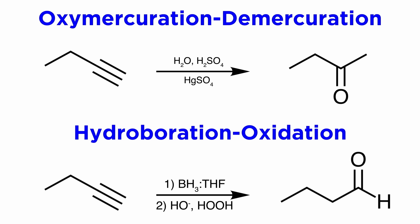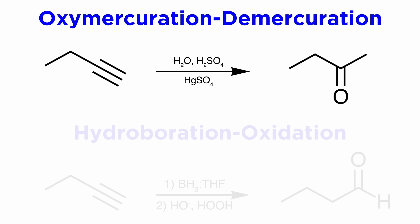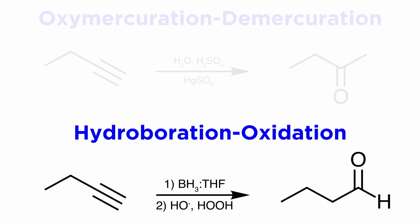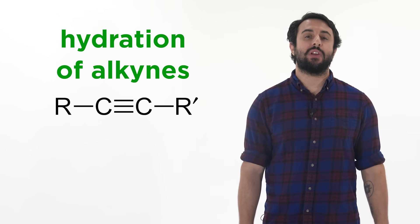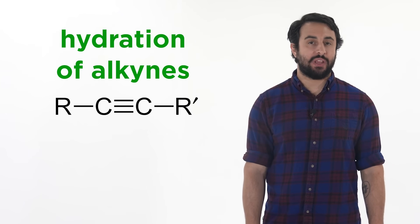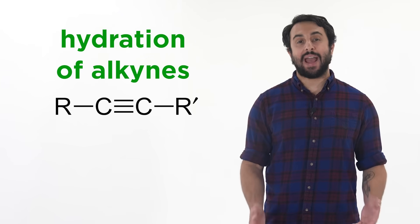So we now have two options in terms of hydrating a terminal alkyne. If we want the methyl ketone, we can use aqueous acid and mercury sulfate; or if we want the aldehyde, we can use hydroboration-oxidation. That gives us a few more tools in our synthetic toolkit regarding alkynes.